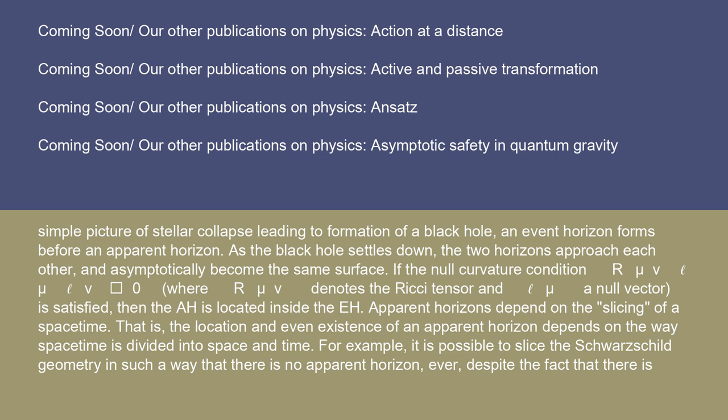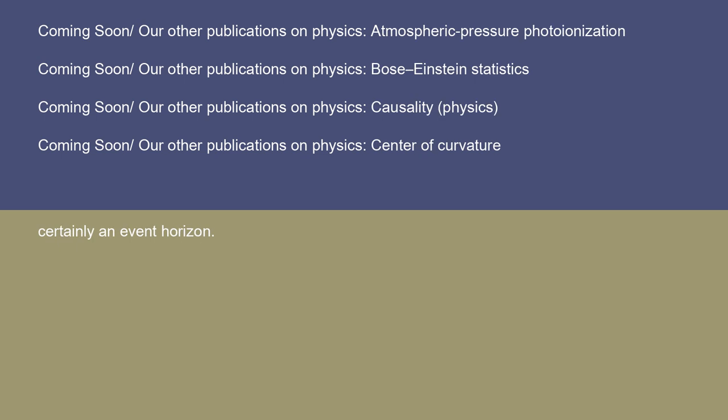If the null curvature condition R_μν k^μ k^ν ≥ 0, where R_μν denotes the Ricci tensor and k^μ a null vector, is satisfied, then the AH is located inside the EH. Apparent horizons depend on the slicing of a space-time — that is, the location and even existence of an apparent horizon depends on the way space-time is divided into space and time. For example, it is possible to slice the Schwarzschild geometry in such a way that there is no apparent horizon ever, despite the fact that there is certainly an event horizon.